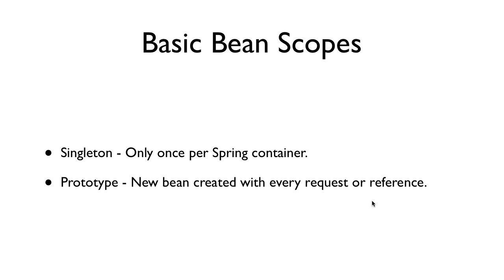These are the two basic scopes: Singleton, which is the default, and Prototype. The Singleton default causes Spring to initialize all beans during load time. When the context is initialized, all singleton beans get initialized — it does not wait for a getBean(). However, if a bean is defined as Prototype, Spring waits for the getBean() to happen, and only then initializes it, which makes sense because for every getBean() it has to do the initialization anyway.